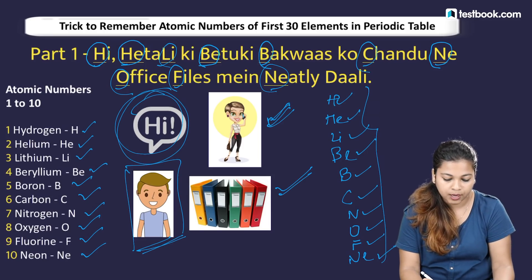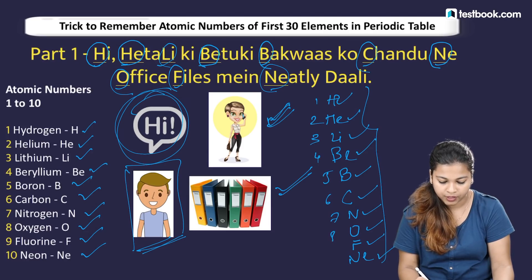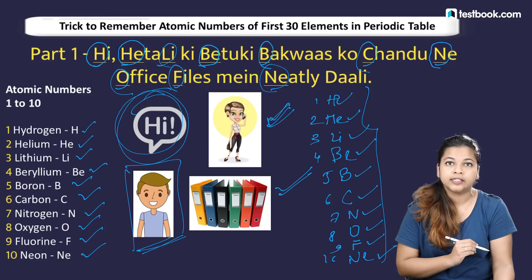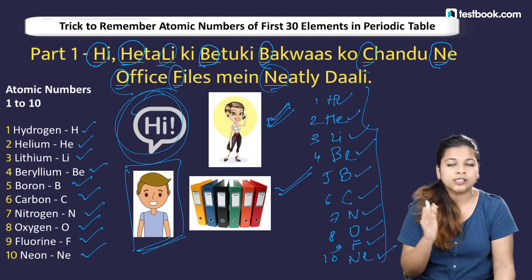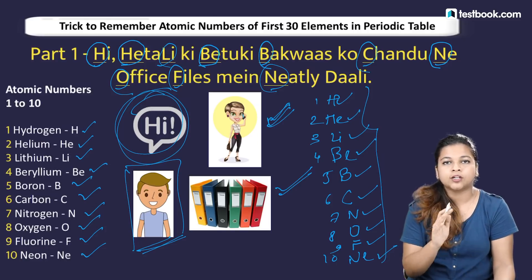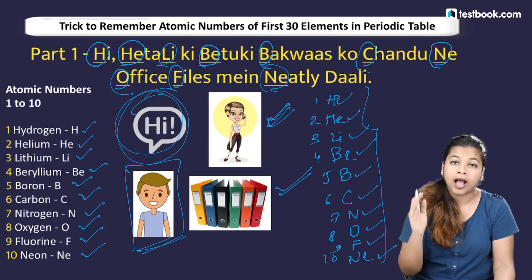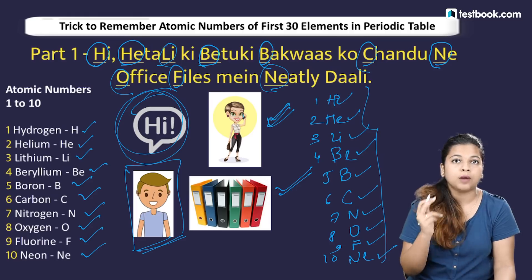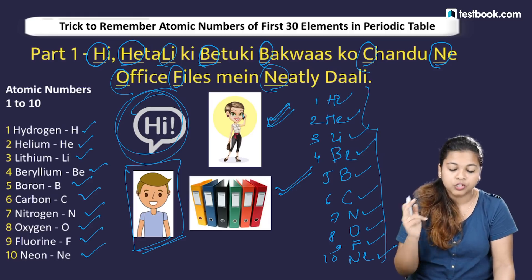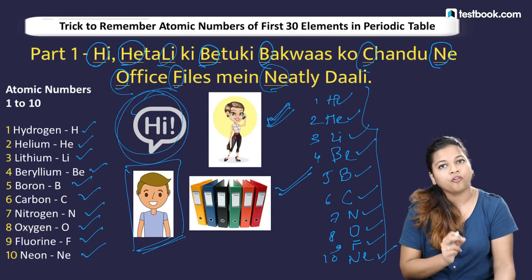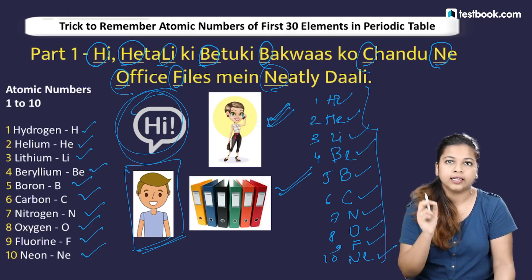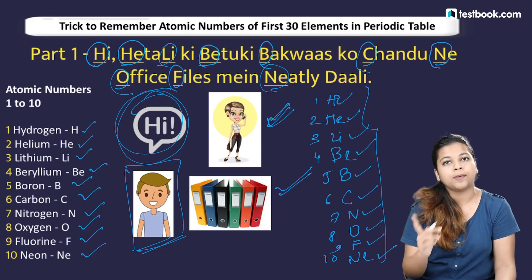So the first 10 elements and their atomic numbers are remembered chronologically using this sentence. Hydrogen is 1, helium 2, lithium 3, beryllium 4, boron 5, carbon 6, nitrogen 7, oxygen 8, fluorine 9, and neon 10. Remember: 'Hi, Heta Li ki betukey bakwas, Chandu ne office files mein neatly dali.'